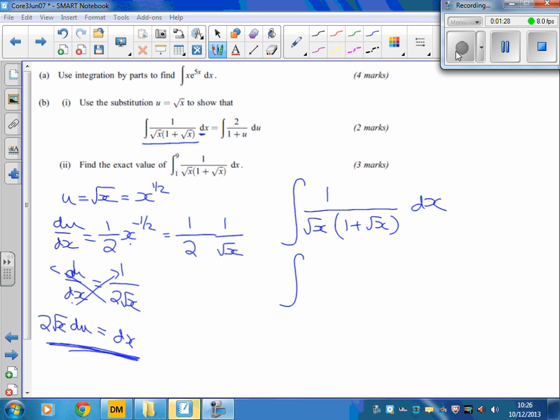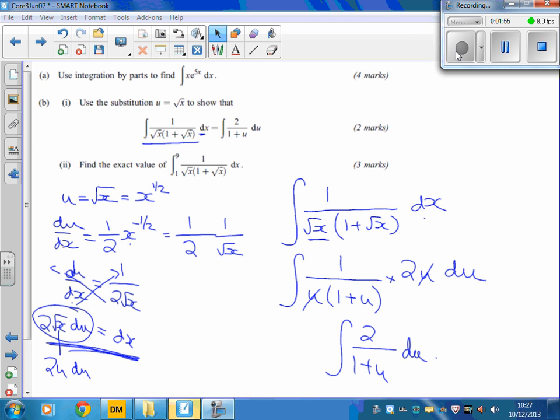Doing all the substitutions, this thing here is being called u, and dx is 2 the square root of x du. But of course, that's another u, isn't it? So we've got times by 2u du. This u cancels with this u, leaving you 2 over 1 plus u du. And the rest is on the other recording.